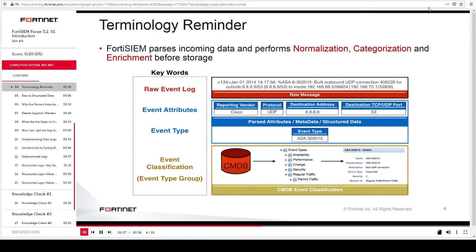The original log message sent to FortiSIEM is known as rawEventLog. You will parse each message into an event type first, and then parse various fields known as event attributes. In the last stage of the parsing process, in the CMDB, there are various classifications for these events. You will send raw log messages to FortiSIEM, map event types, parse various fields from the raw log messages, and then add those events to the CMDB.